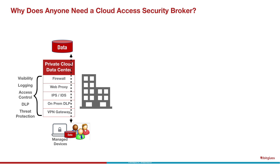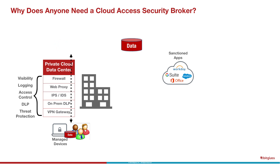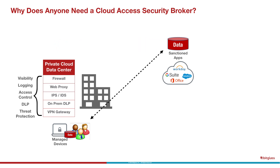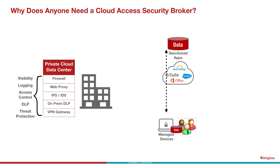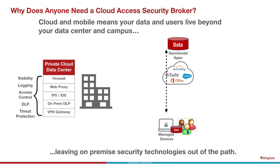and rich logging into how that data was being accessed and what it was being used for. This world doesn't really exist anymore, and the reason is because of cloud. There are SaaS applications like Office 365, G Suite, Workday, and Salesforce that have been adopted by enterprises, and as such, the data has moved out of that private cloud data center into these cloud applications. Not only has the data moved, but the users have moved as well, because we live in a mobile world and users want to access their data and applications from places outside of the office. The consequence is that cloud and mobile means your data and your users live beyond the data center and the campus, leaving on-premise security technologies out of the path.